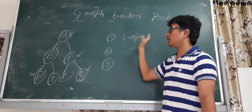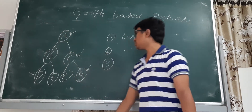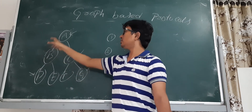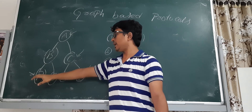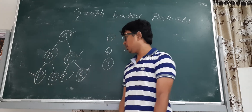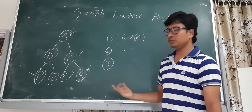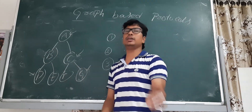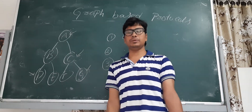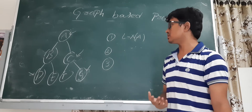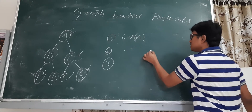To summarize the rules: first, only exclusive locks are used — no shared locks in this protocol. Second, it operates on a tree-based structure. Third, the first lock can be placed on any data item; subsequently, any data item can only be locked if its parent is already locked. Fourth, you can release a lock at any moment, but once released, you cannot lock that data item again.